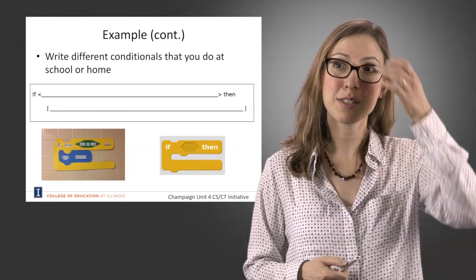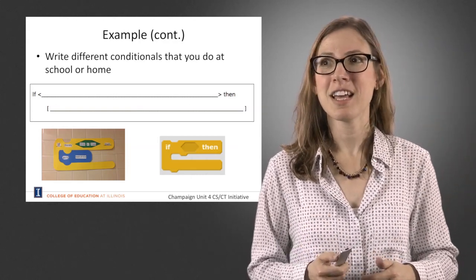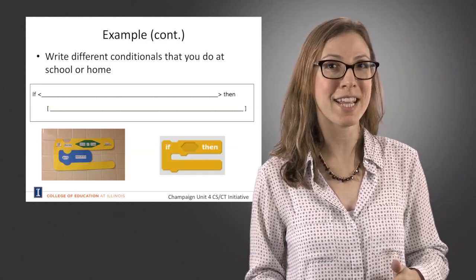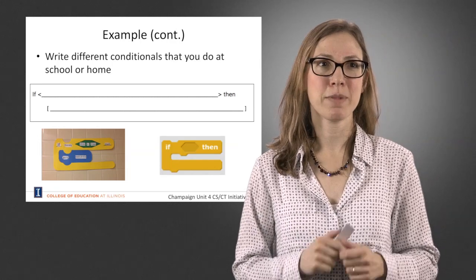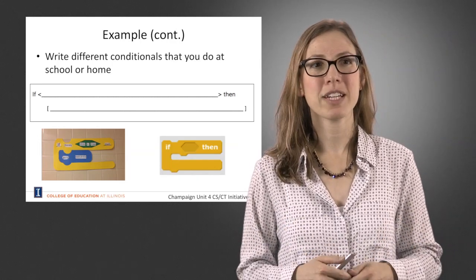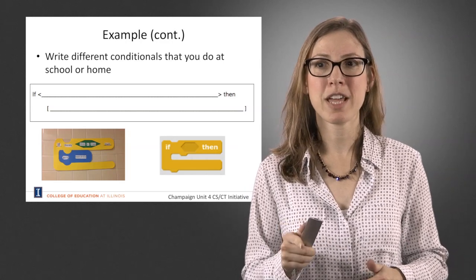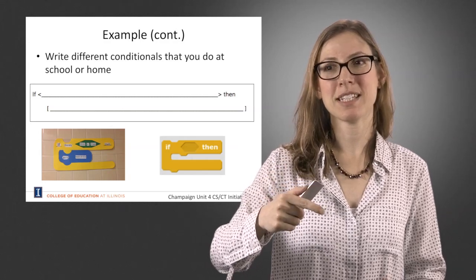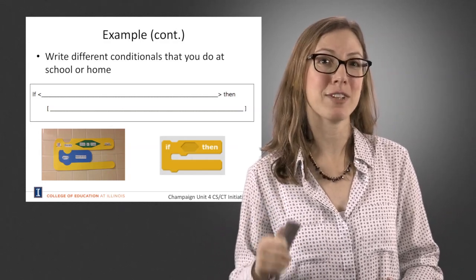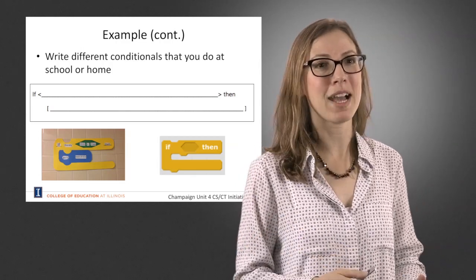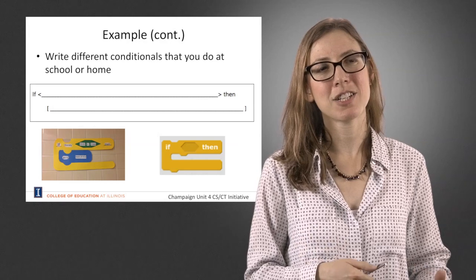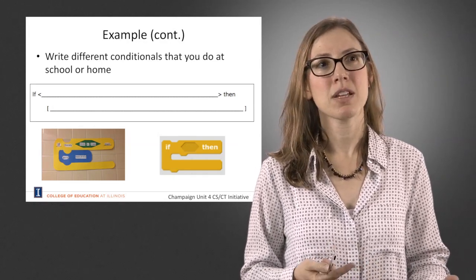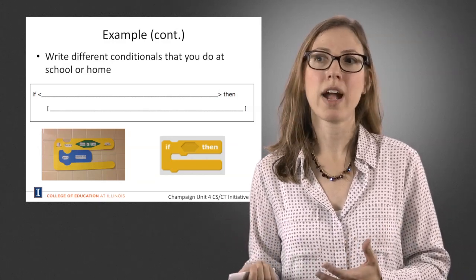Here's an example: she had students write different conditionals that they do at school and at home. For instance: if I do my homework right when I get home from school, then I get to watch 30 minutes of television. A funny example shown in the picture involves a water fountain — if I'm thirsty, then I'm going to drink for less than three seconds, and then I'm going to go to the back of the line. Only after that were students introduced to the if-then block within Scratch.